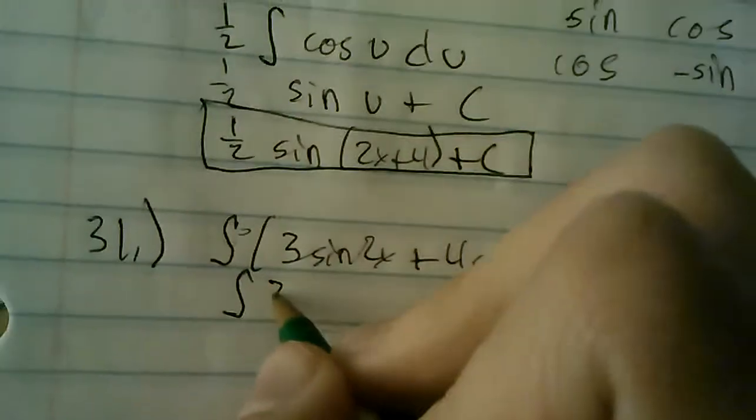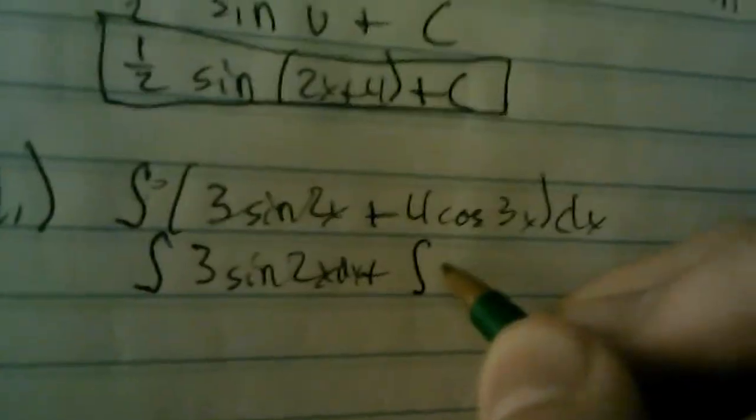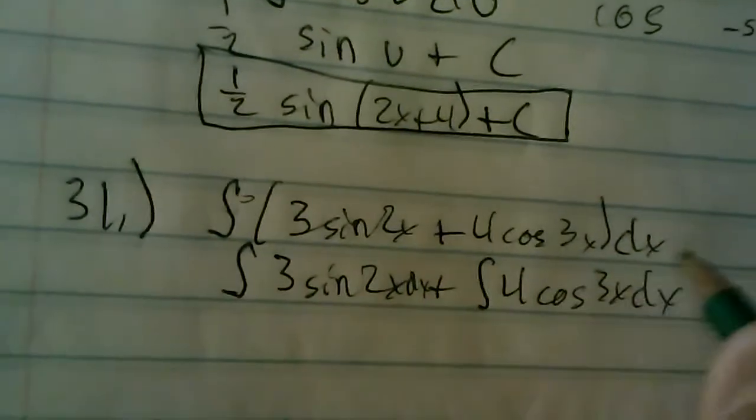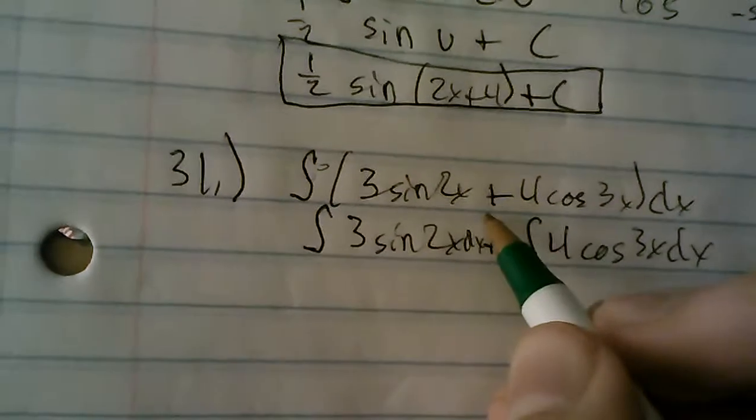So we can do the integral of 3 sine 2x dx, plus the integral of 4 cosine 3x dx. Because the dx gets distributed to each term. So, now we can do these integrals separately.